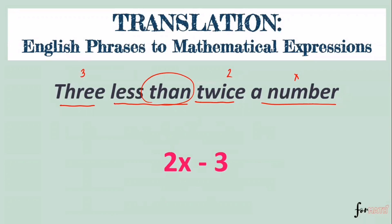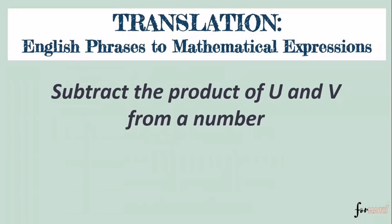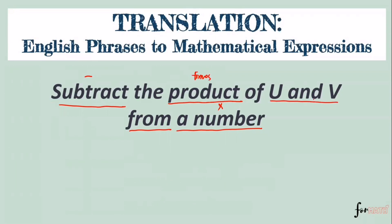Next: 'Subtract the product of u and v from a number.' Let our number be x. The word 'from' tells us x comes first. Subtract means minus, and the product of u and v is uv. So we subtract uv from x — the answer is x minus uv.